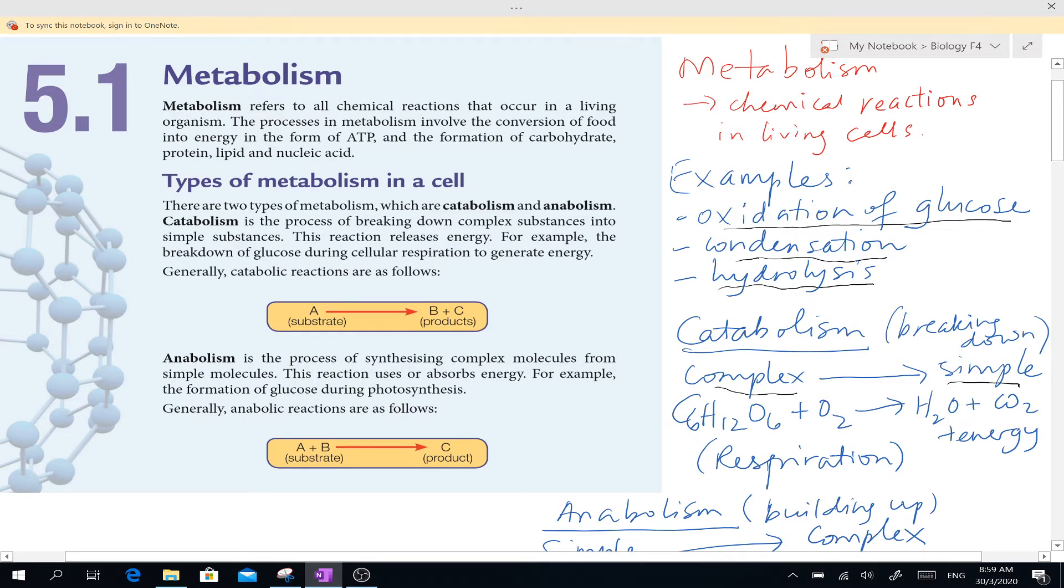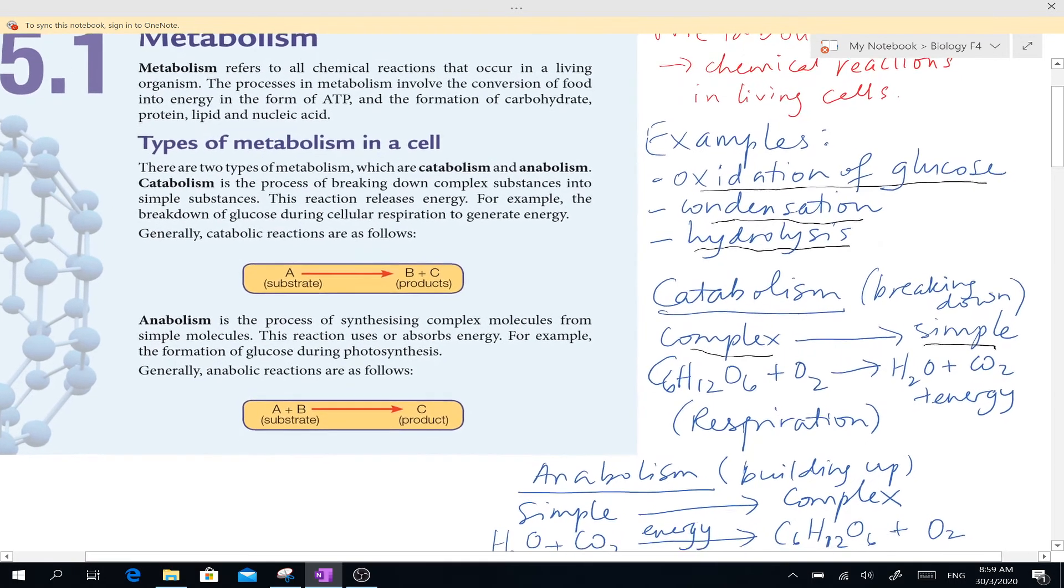An example of a catabolic reaction is where you have your glucose. Glucose is broken down—this is oxidation actually. Glucose reacts with oxygen, it's broken down, you get water and carbon dioxide and also energy is released.